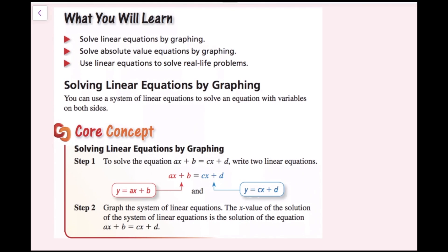You can use a system of linear equations to solve an equation with variables on both sides. Step one: to solve the equation ax plus b equals cx plus d, write two linear equations.